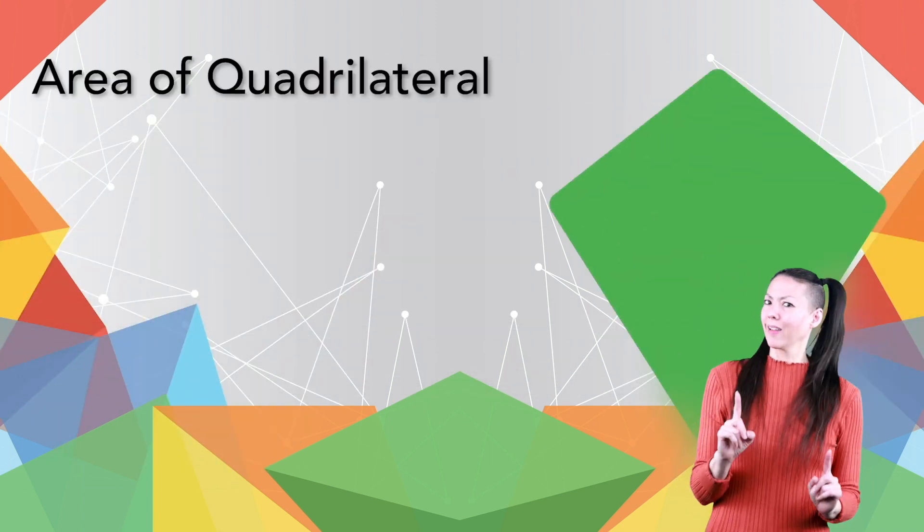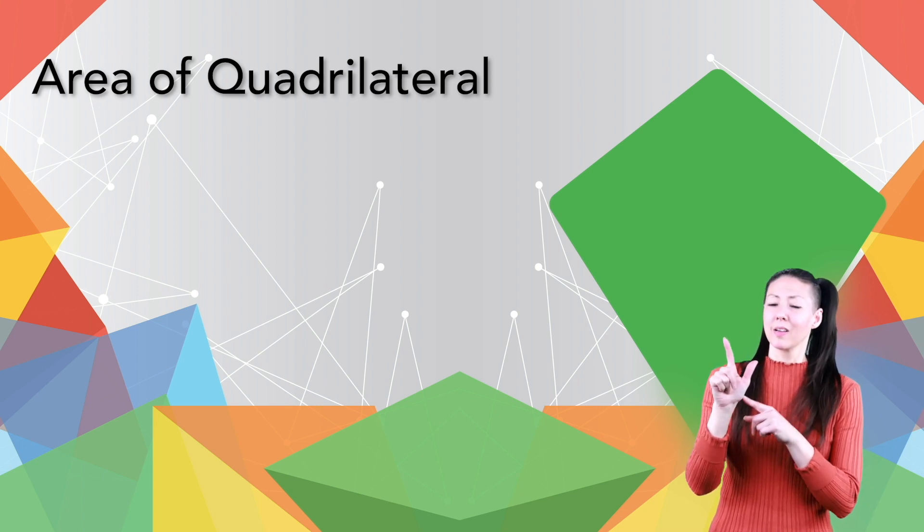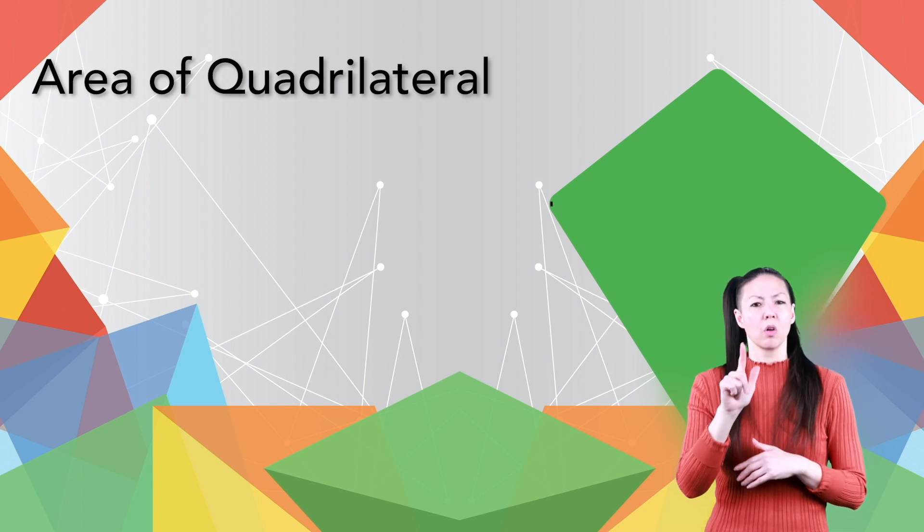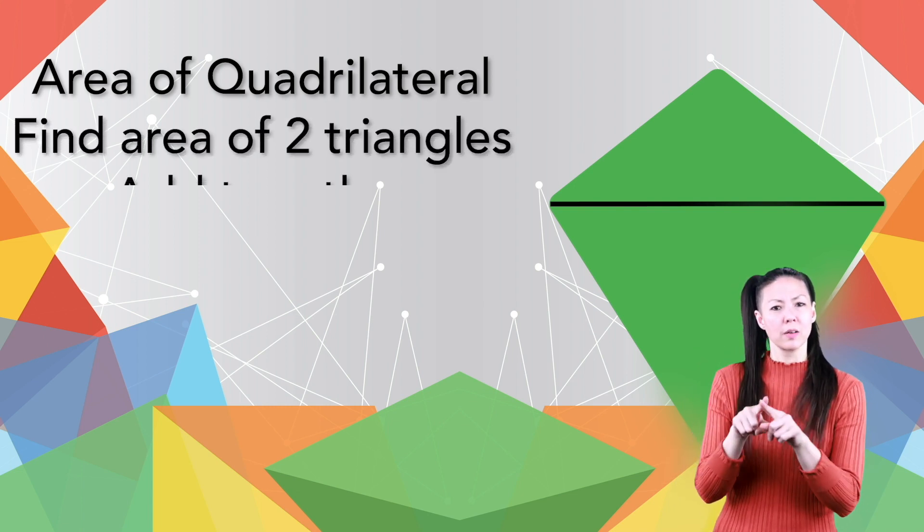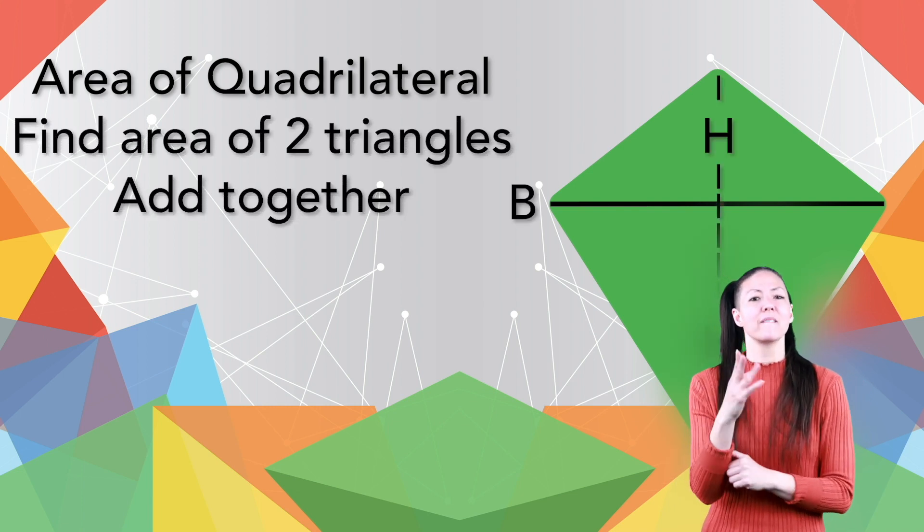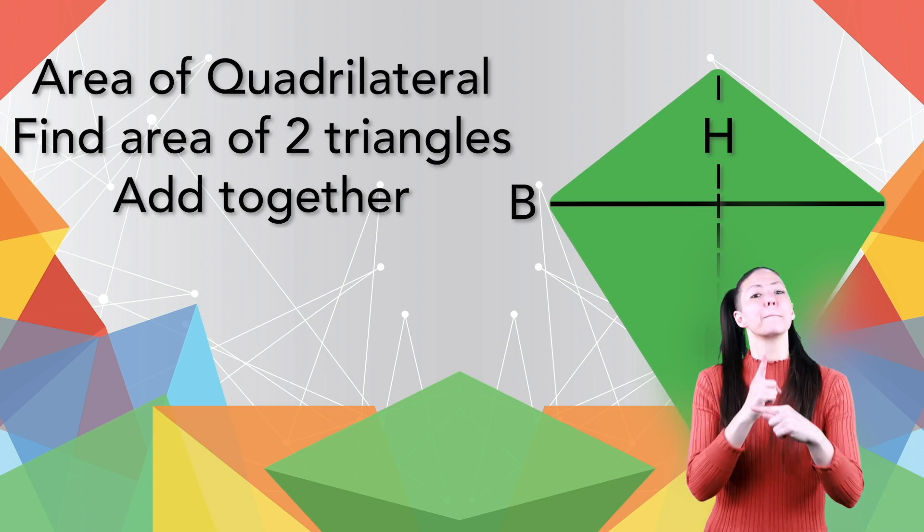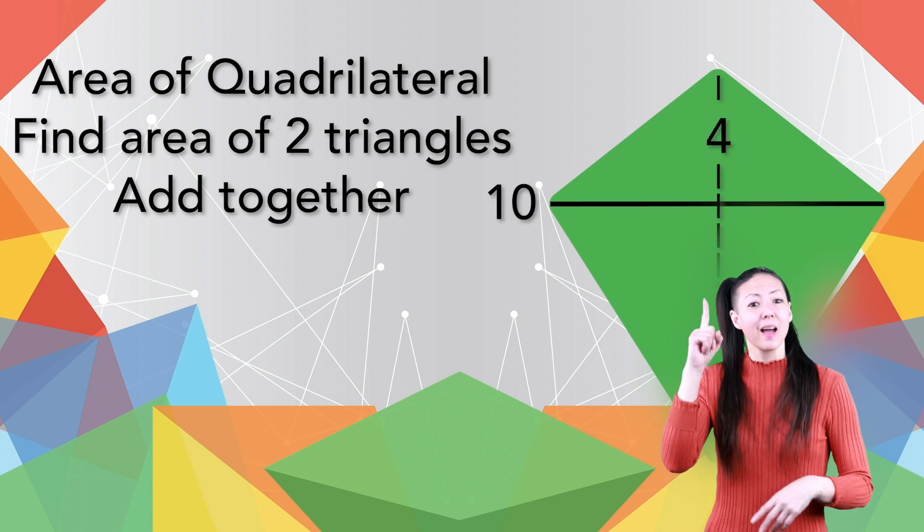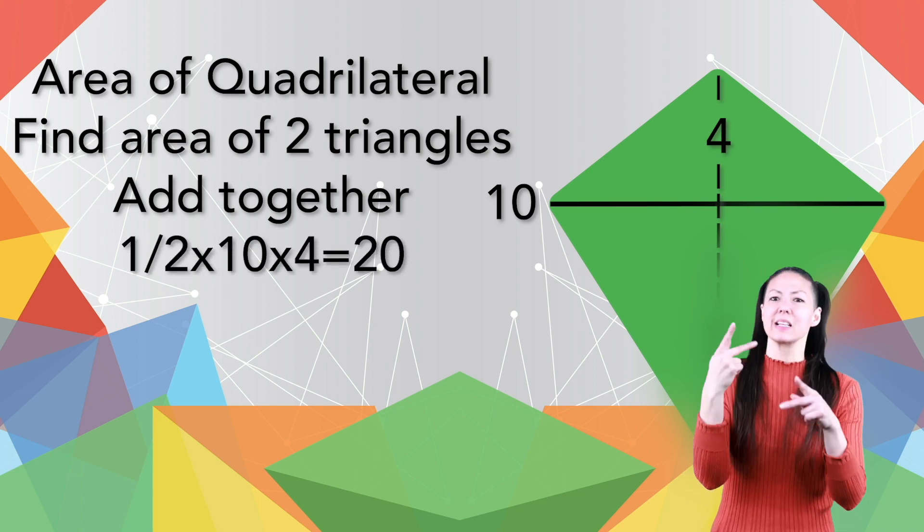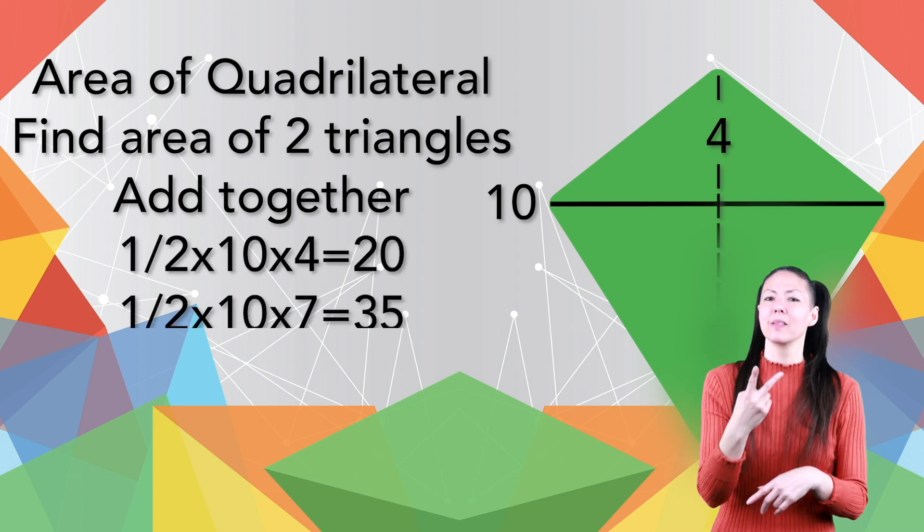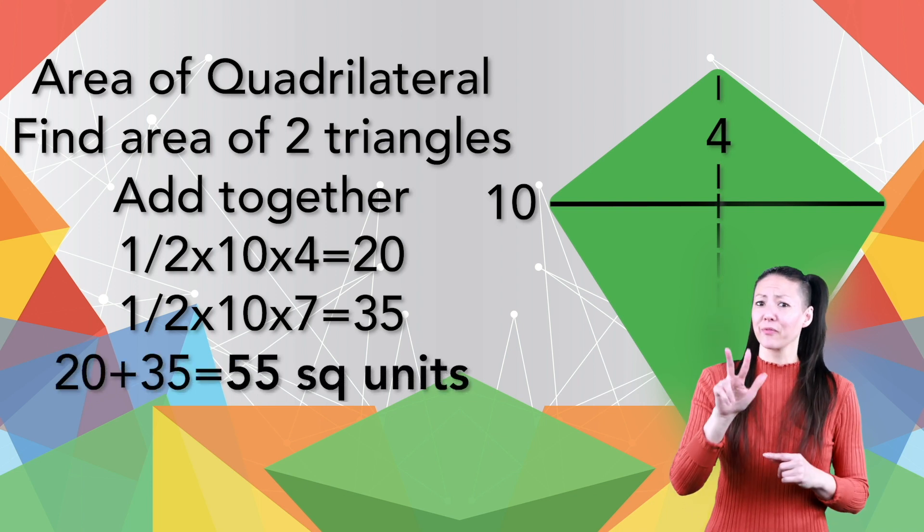Finally, the quadrilateral. First, draw a diagonal to turn it into two triangles, then find the area of those two triangles separately and add them together. One half base times height plus one half base times height. The area of this quadrilateral would be one half of ten times four plus one half of ten times seven, or 20 plus 35, 55 square units.